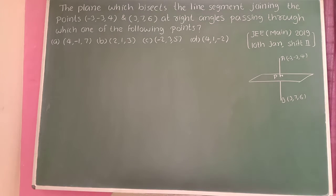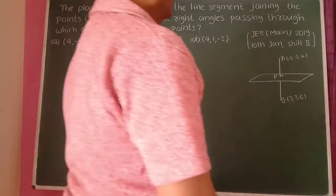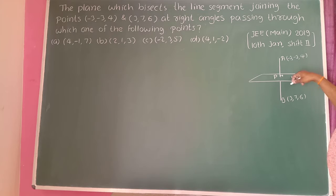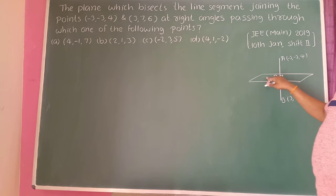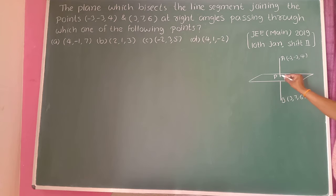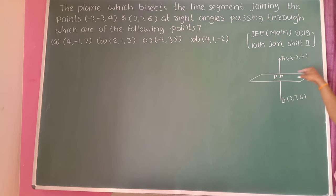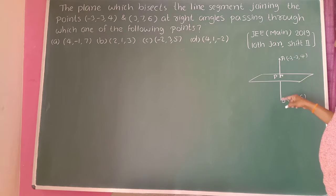Next problem: Find the equation of the plane which bisects the line segment joining points A(minus 3, minus 3, 4) and B(3, 7, 6) at right angles, and determine which point lies on this plane. The plane bisects AB, so point P is the midpoint of AB. Also, AB is normal (perpendicular) to this plane, so find the direction ratios of AB as well.